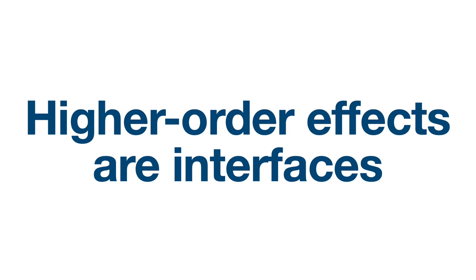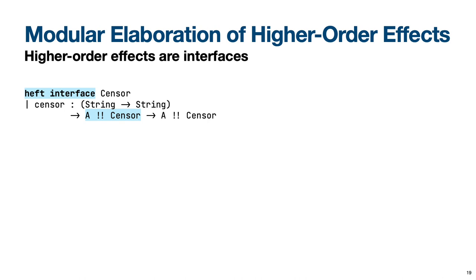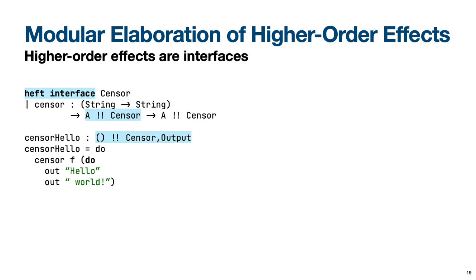First, let's discuss how we declare and program against higher-order effect interfaces. Higher-order effect interfaces can be declared similarly to algebraic effect interfaces. However, since higher-order effect interfaces can only be elaborated but not handled by algebraic effect handlers, we distinguish them by declaring them using the keyword HEFT. We also use a type with two exclamation points to indicate that a computation makes use of higher-order effects. The interface row to the right of a double exclamation point may comprise both higher-order and algebraic effect interfaces. Other than these differences, we can program against higher-order effect interfaces just like algebraic effect interfaces. Note that the keyword HEFT is an acronym for higher-order effect.